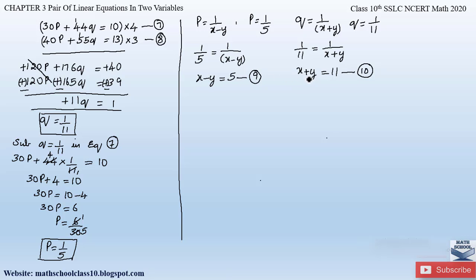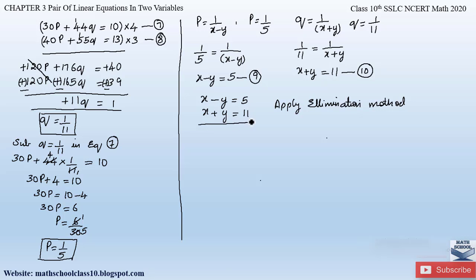Now we have two equations: x minus y equals 5 and x plus y equals 11. Applying the elimination method, the coefficient of y is 1 in both equations with opposite signs, so y is directly eliminated. Adding gives 2x equals 16, therefore x equals 8.